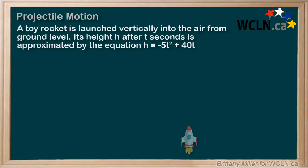A toy rocket is launched vertically into the air from ground level. Its height h after t seconds is approximated by the equation h equals negative 5t squared plus 40t. And then we have a few questions about this scenario.